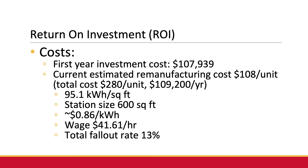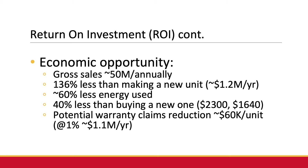The total first-year investment cost for this system is about $107,000, with about $80,000 of this coming from wage cost, so the tools being used are pretty cost effective. The current estimated remanufacturing cost is around $108 per unit, estimated using the factors below, with the total cost per unit being $280. Utilizing their total fallout rate of 13%, this is about $109,000 cost per year. Current growth sales are about $50 million annually, with the cost of remanufacturing being about 136% less versus making a new one — a $1.2 million per year savings.